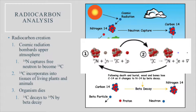Carbon-14 gets incorporated into tissues of living animals and plants, just like all other carbon molecules — we are primarily carbon-based organisms. Then the organism will die, and the clock starts to tick, essentially. The C-14 will decay back into N-14. So: nitrogen, neutron, pops out a proton, becomes carbon. And when it decays by beta decay, the carbon-14 becomes nitrogen, and you lose an electron neutrino.